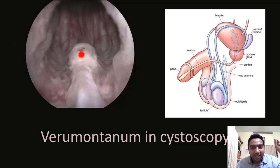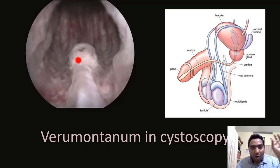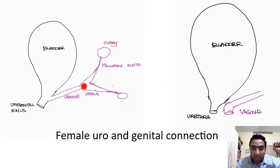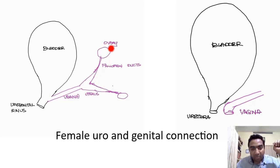That opening where the genital system opens into the male urethra is called the verumontanum. Now what about females? We have already seen that into the urogenital sinus opens the paramesonephric duct, which becomes the uterus, the fallopian tubes, and later the ovary comes near the fallopian tubes.